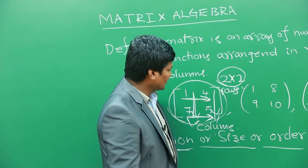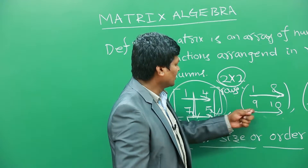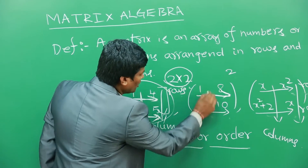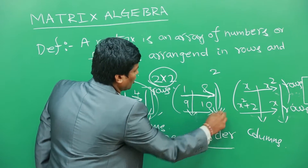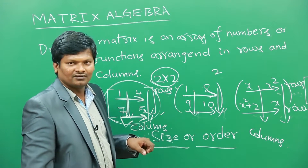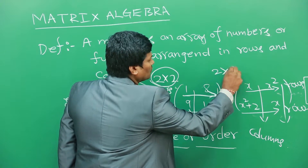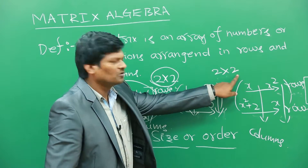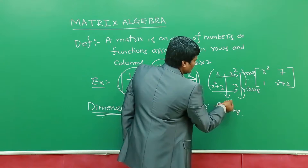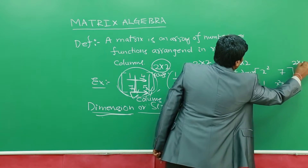If you look at this matrix, it also has two rows. The first row is 1, 8 and the second row is 9, 10, and this matrix also has two columns. The first column is 1, 9 and the second column is 8, 10. So the dimension of this matrix is also 2 by 2.